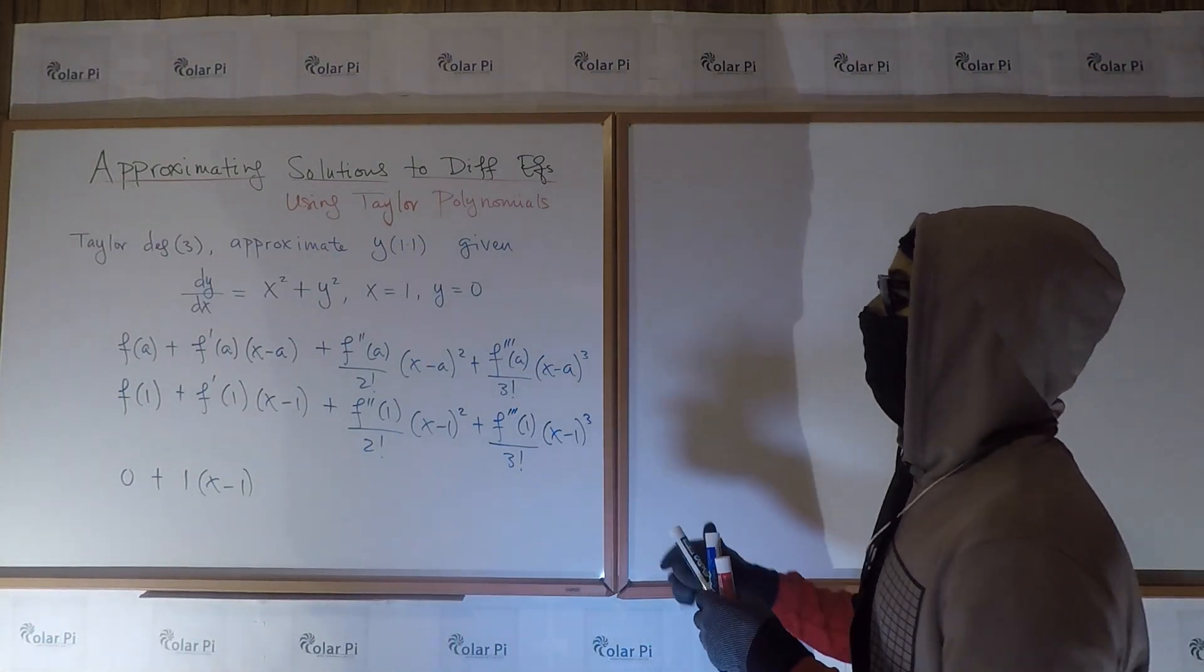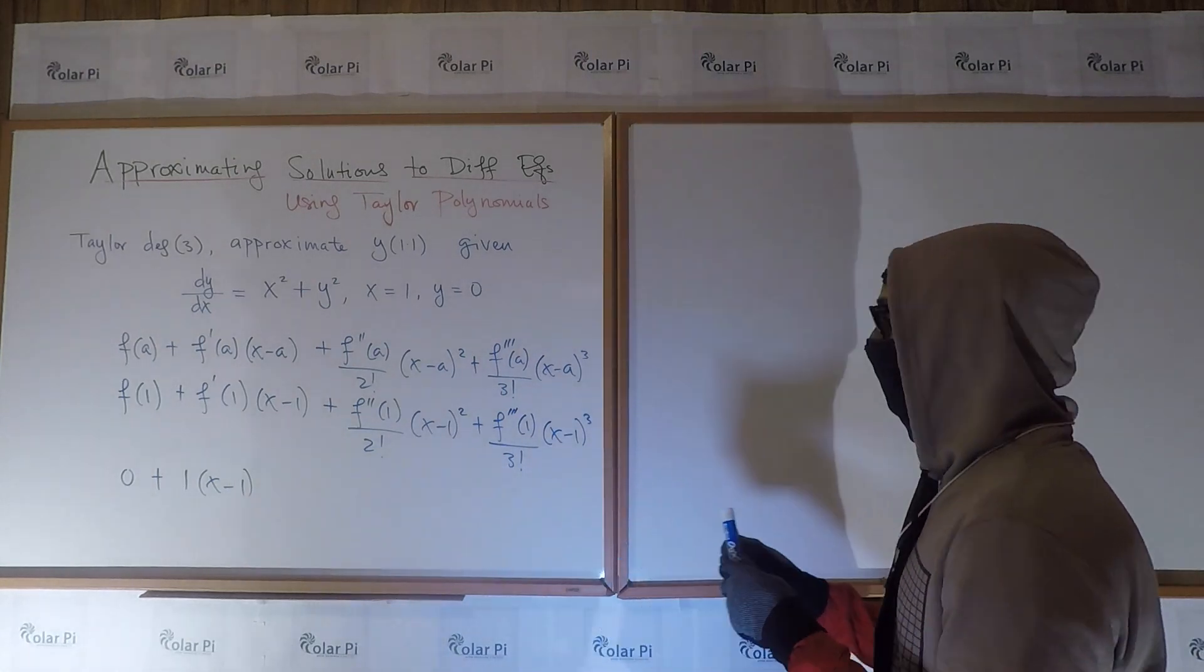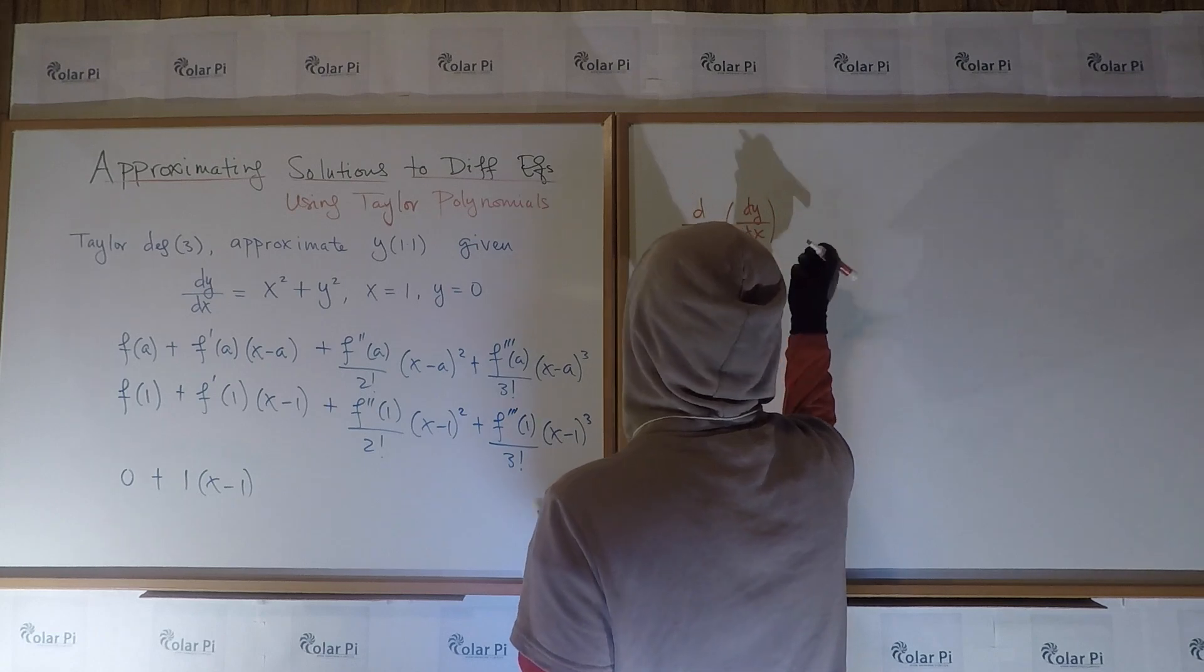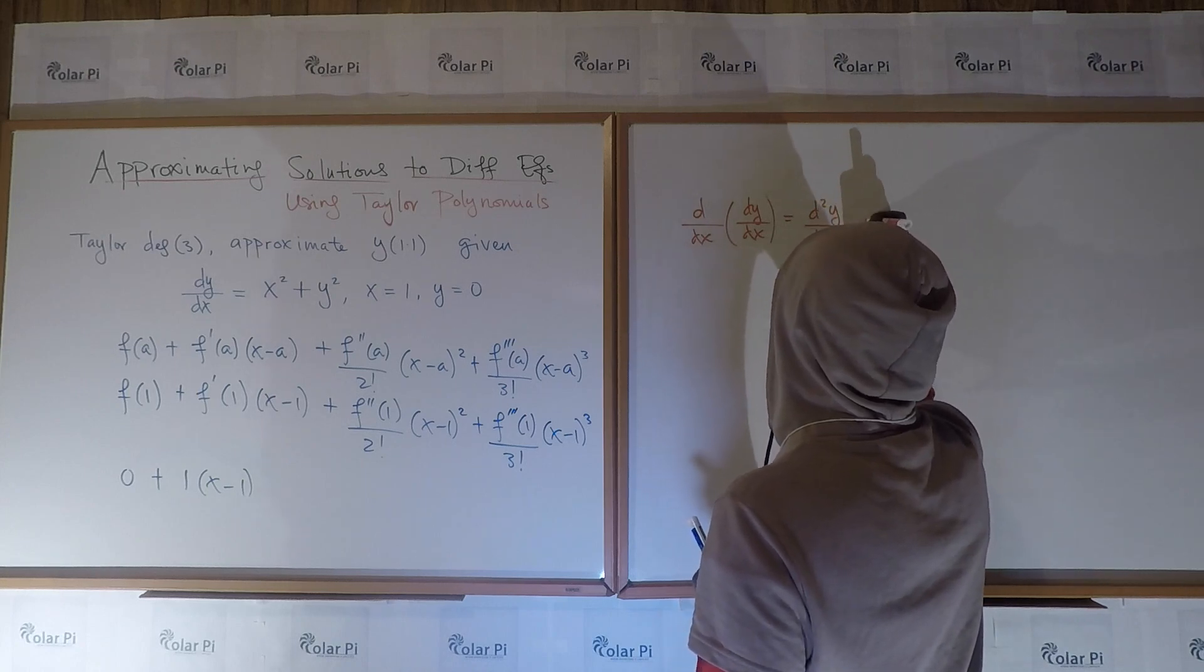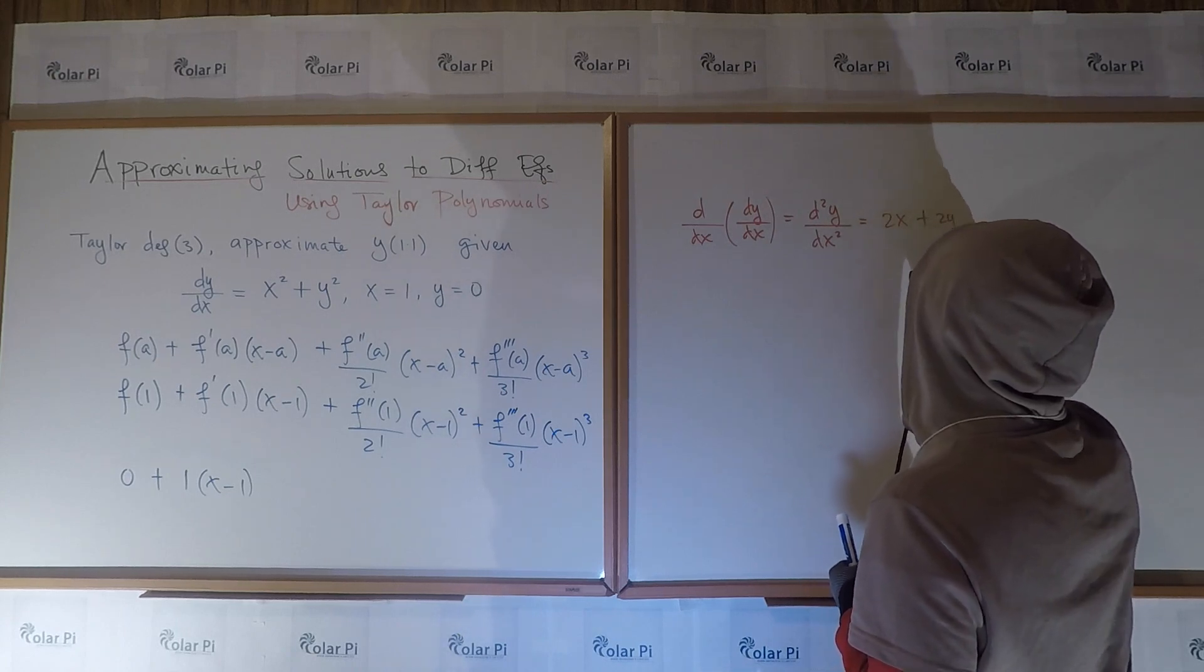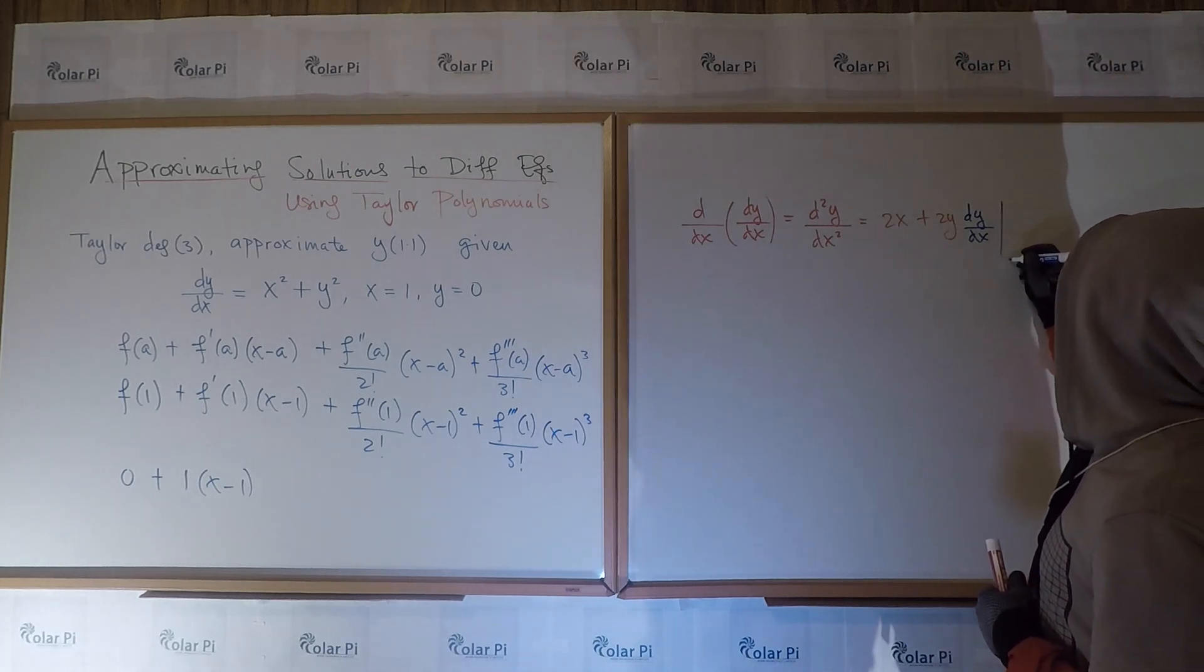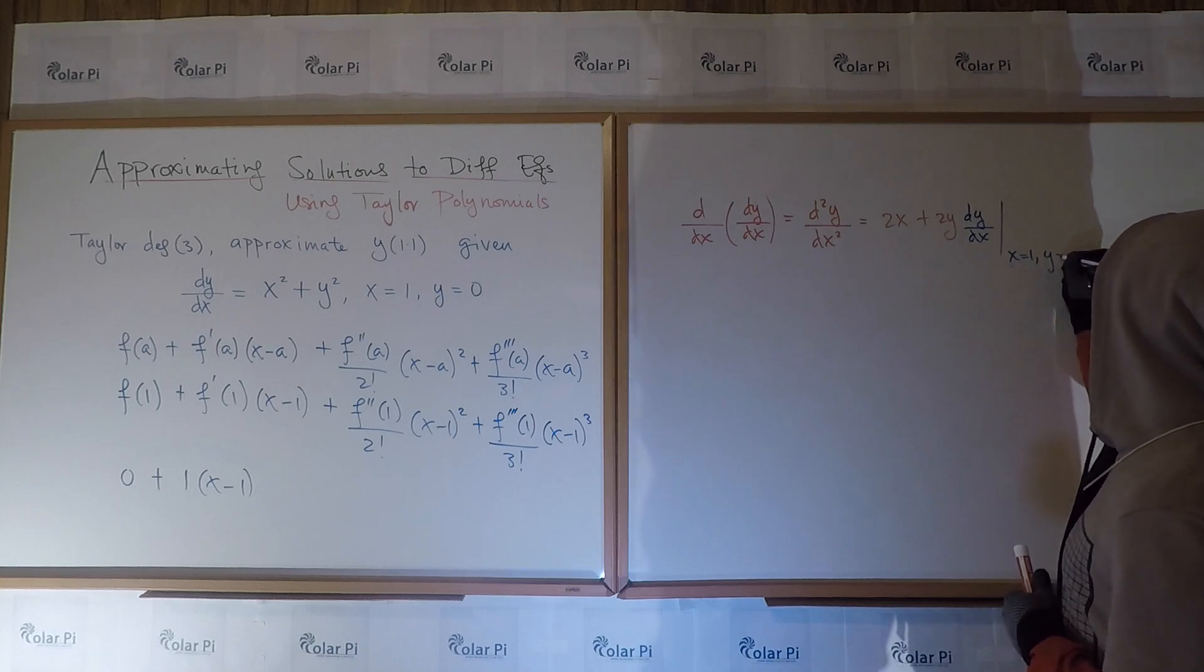So we have 0 plus f'(1) would be plugging in, well, evaluating the derivative at x equals 1. x equals 1 is accompanied by y equals 0, and since the derivative involves both x and y, the first derivative evaluated at 1 would mean we plug in 1 for x here and 0 for y. So that's clearly 1 squared plus 0 squared, and that's 1. So f'(1) is 1, so we have 1 times x minus 1 so far, and then we have to write the rest.